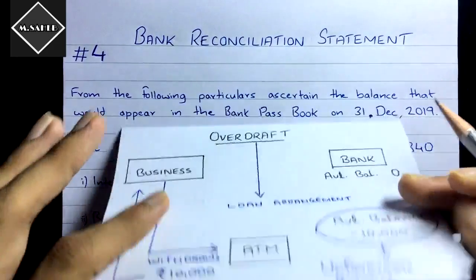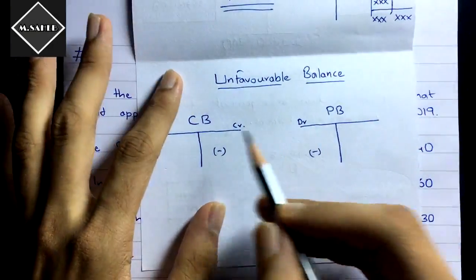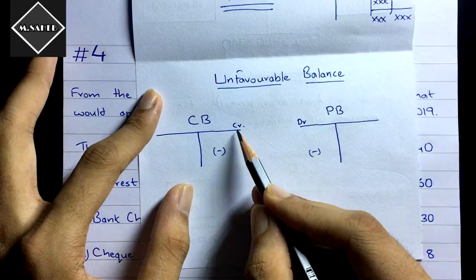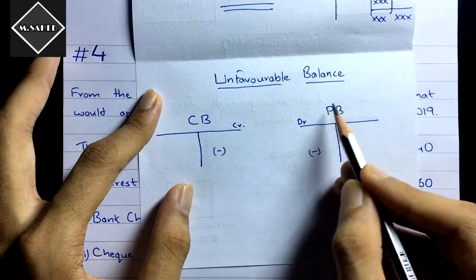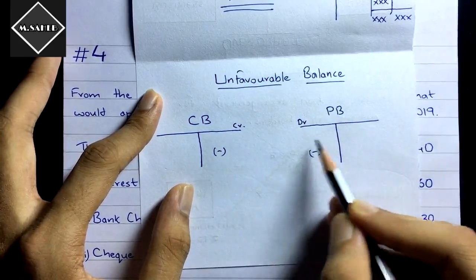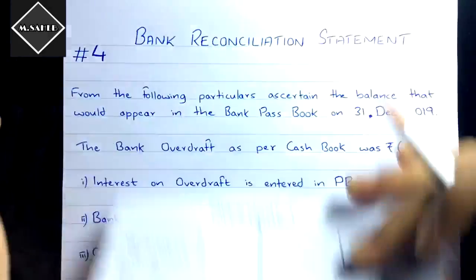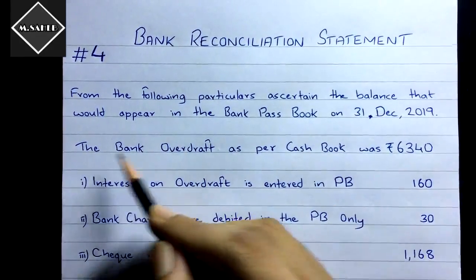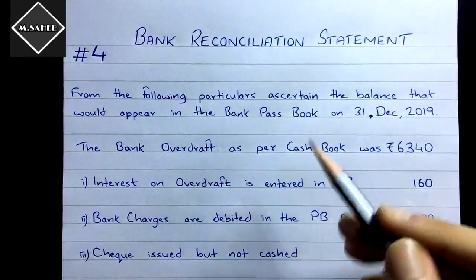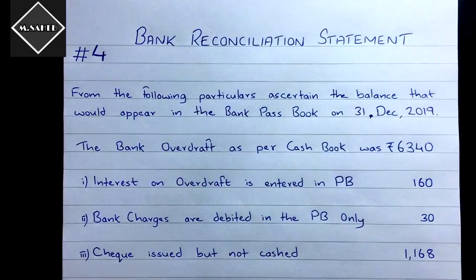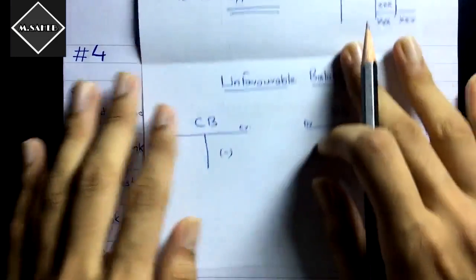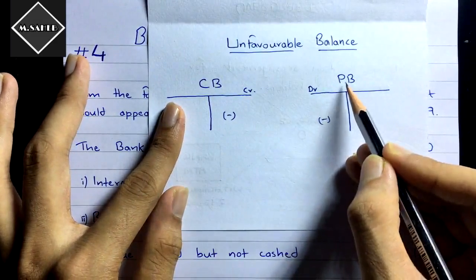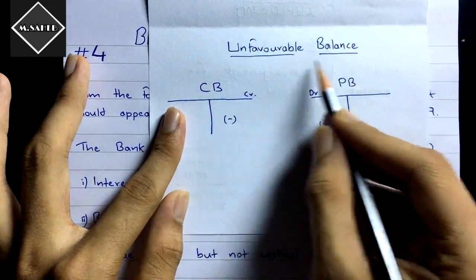According to the bank — the passbook — this unfavorable balance is called a debit balance. And according to the business — the cash book — this is called a credit balance. The question can be twisted, so you must understand the meaning of the words and their logic. Credit balance as per cash book is the unfavorable balance, and debit balance as per passbook is the unfavorable balance.